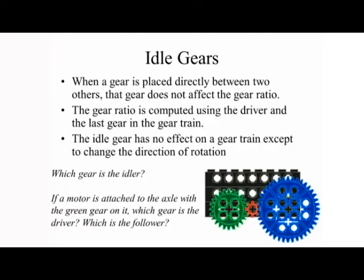Idler gears: when a gear is placed directly between two others, that gear does not affect the gear ratio. The gear ratio is computed using the driver and the last gear in the gear train. The idler gear has no effect on the gear train except to change the direction of rotation. Which gear is the idler? The motor is attached to the axle with the green gear — identify which gear is the driver and which is the follower.